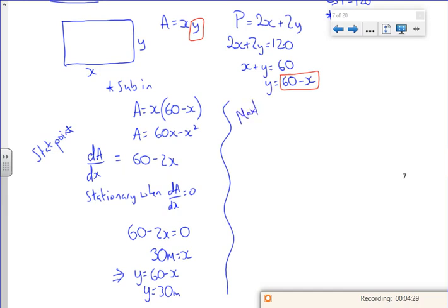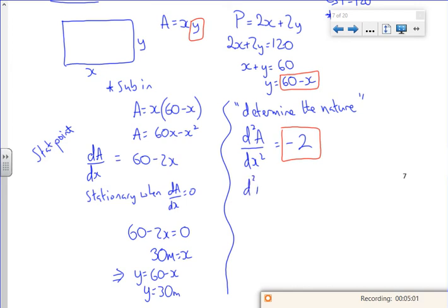So I want to max and min. Actually, I'm going to put nature, determine the nature, because that's a saying which comes up on exam papers. So I want to do the second differentiation. So that's minus 2. Now as it happens, I don't need to sub in a value. I've just got minus 2. If it was minus 2x, I'd just sub in the x value. I've got minus 2 as a value for a second differential. So d²A by dx² is less than zero. Therefore, that's the maximum area when x equals 30 meters and y equals 30 meters.